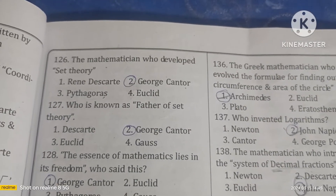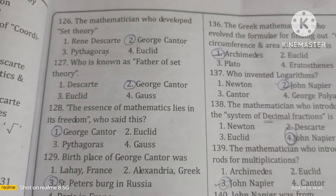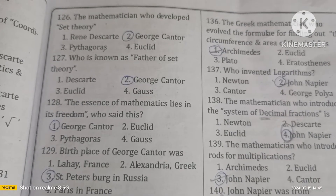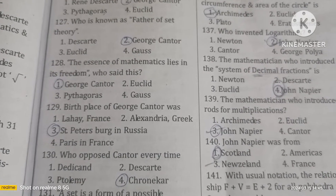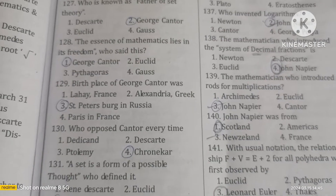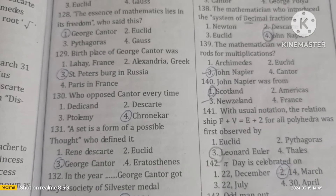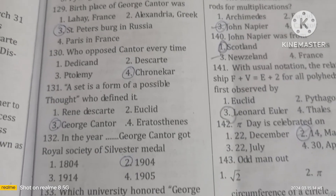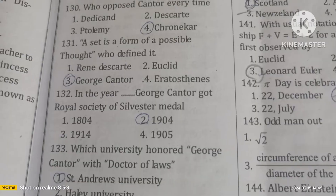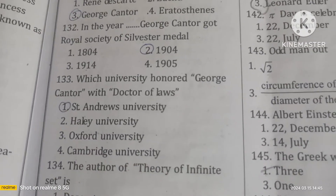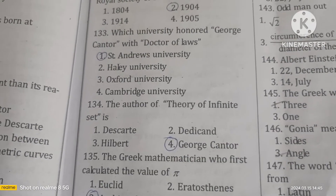George Cantor developed set theory and is known as the father of set theory. 'The essence of mathematics lies in its freedom' — said by George Cantor. His birthplace was Saint Petersburg in Russia. Kronecker opposed Cantor. 'If a set is a form of possible thought' — George Cantor was defended in 1904. Cantor received the Royal Society's Sylvester Medal, and Saint Andrews University honored him with a Doctor of Laws.